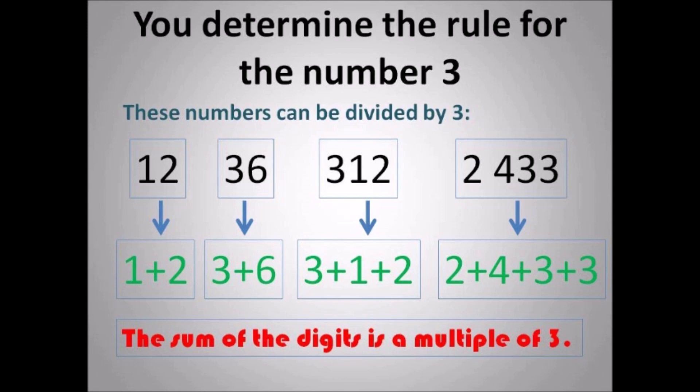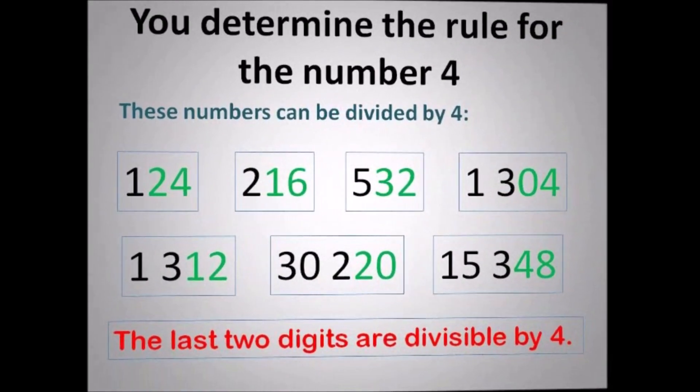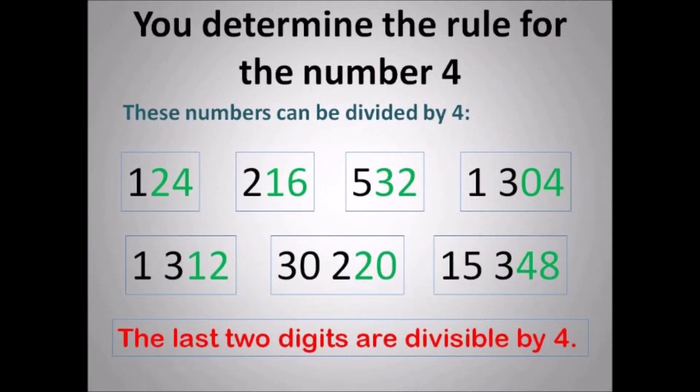For 3: I added the digits in each number and once I'm able to get a multiple of 3, then the number is divisible by 3. 2 plus 1 is 3. 3 plus 6 is 9. 3 plus 1 plus 2 is 6. 2 plus 4 plus 3 plus 3 is 12. So once you add the digits and get a multiple of 3, it can be divided by 3.